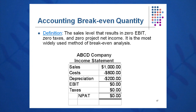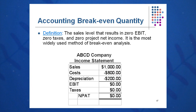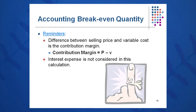Sales for ABCD company are $1,000, costs are $800, depreciation is $200, with no EBIT, no taxes, and no NPAT. So in this case, we have accounting breakeven. The accounting breakeven quantity is the quantity, or sales level, that results in zero EBIT, zero tax, and zero NPAT. So how many of these widgets do I need to make and sell just to break even? It's a very interesting and useful analysis.